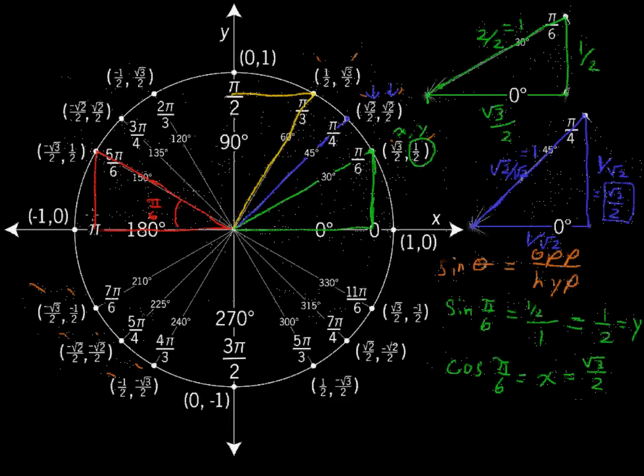Short leg, or the y component, y coordinate, is 1 half. The long leg, the x-coordinate, is the square root of 3 over 2. And then, of course, we do know that it's negative. The x-coordinate in this quadrant 2 is always negative.